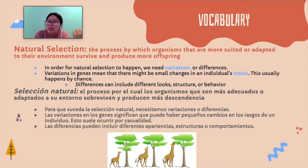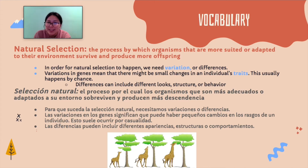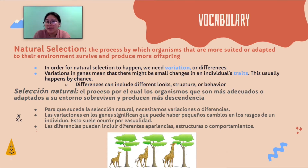In order for natural selection to happen, we need variation or differences. You can think of it like trying to select your favorite candy — you need to have options first. Variations in genes means there might be small changes in the individual's traits, and this usually happens by chance. These differences can include different looks, structure, or behavior.